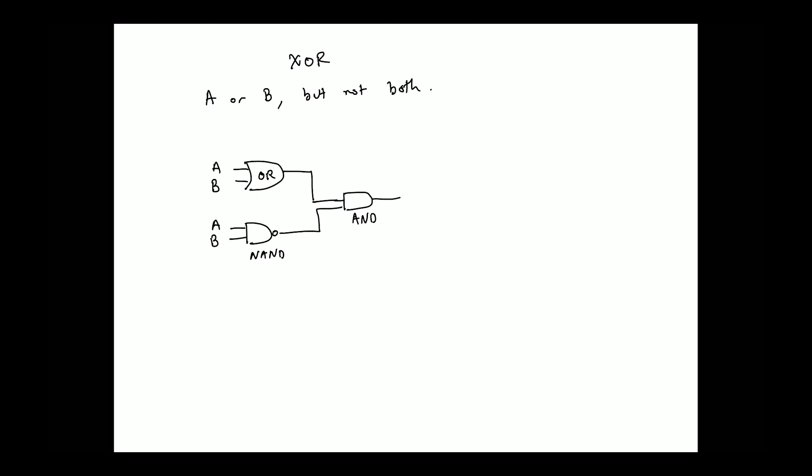The scheme here is: if it has a rounded back, it's an OR gate. If it has a square back, it's an AND gate. And then that little loop you see there makes it a NAND gate — the loop is a negation.